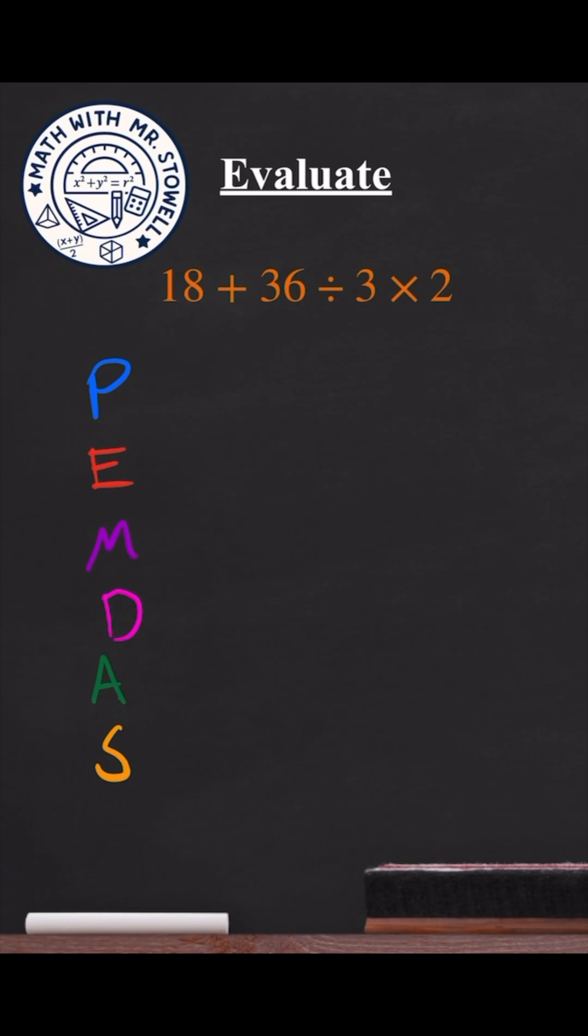P represents parentheses, E is exponents, M is multiplication, D is division, A is addition, and S is subtraction.